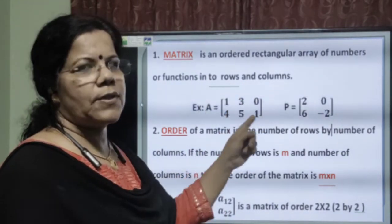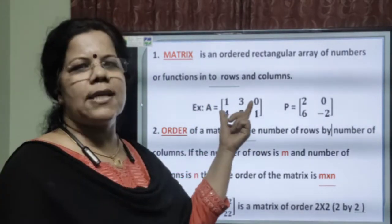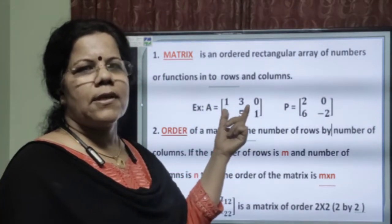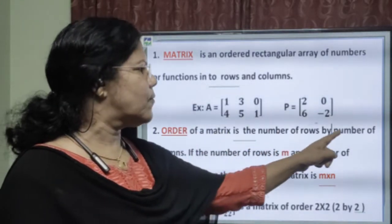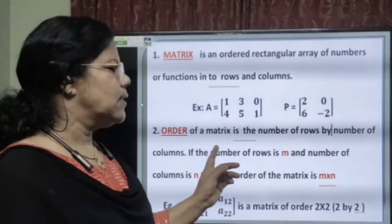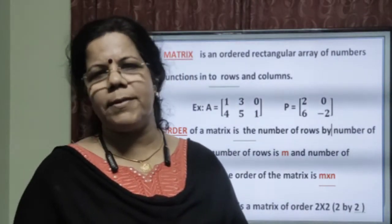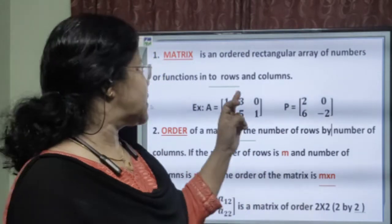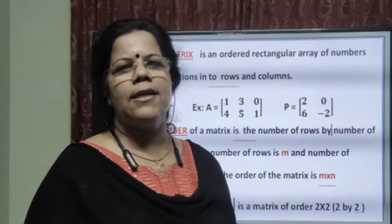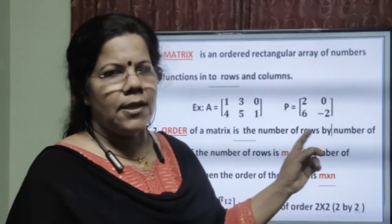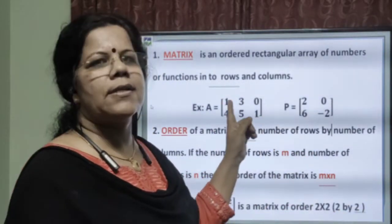There are two rows and three columns. This brings the question: what is the order of the matrix? The order of the matrix is the number of rows by the number of columns. So, if there are M rows and N columns, the order of the matrix is M by N. In this example, A is of order 2 by 3 and P is of order 2 by 2. If the order is M by N, clearly there will be MN elements.